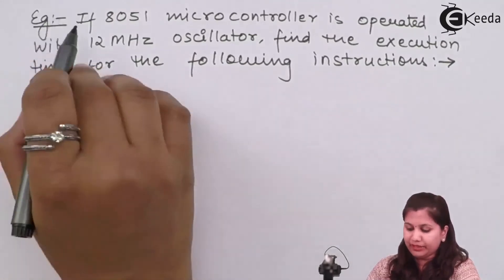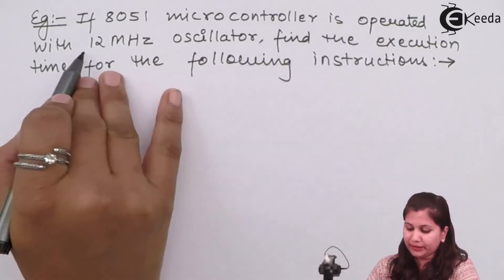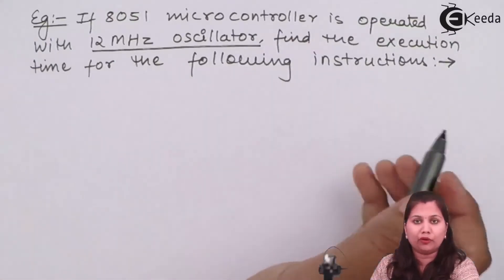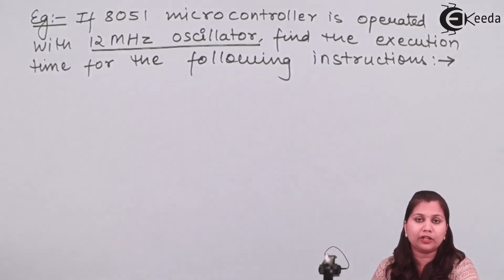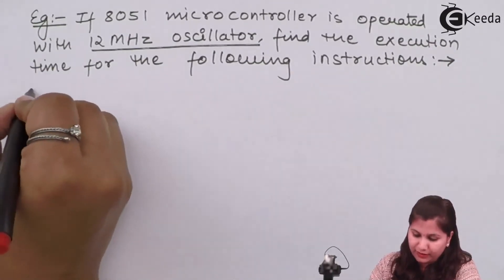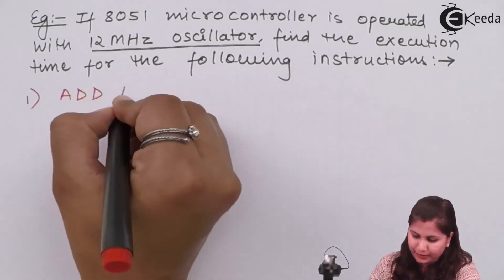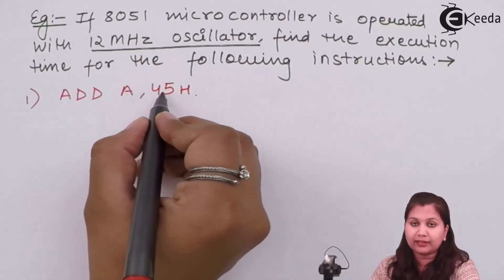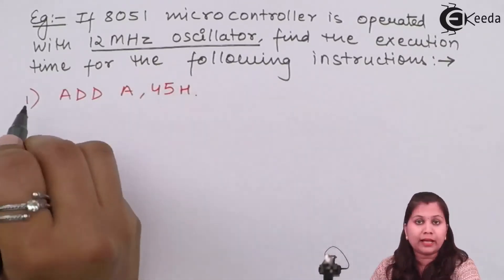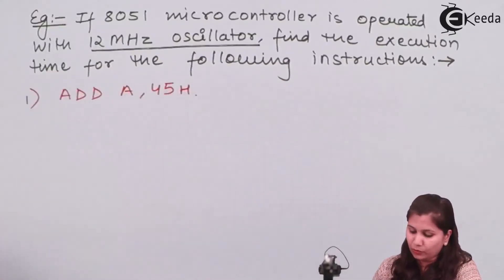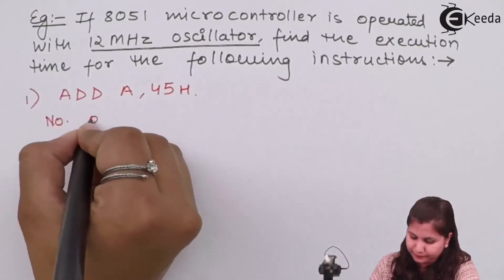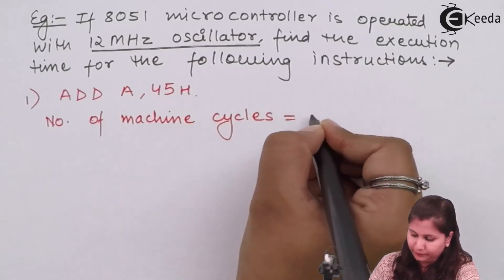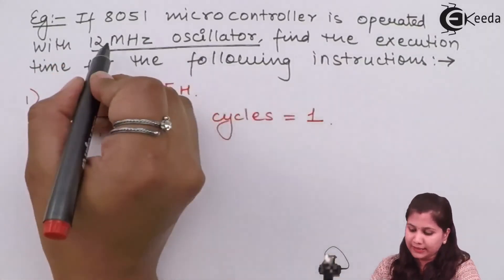Let's take an example to more clearly understand these three terms. We are given that the 8051 microcontroller is operated at a 12 MHz oscillator frequency, and we have to find the execution time for the following instructions. The first instruction is ADD A, 45H — we add the contents of the accumulator with the contents of that memory location. The number of machine cycles involved in this instruction is 1.